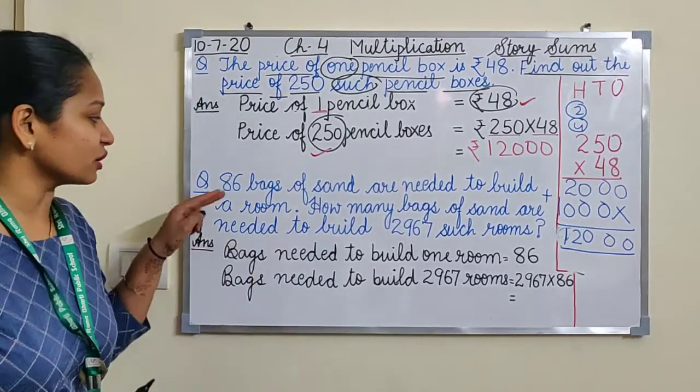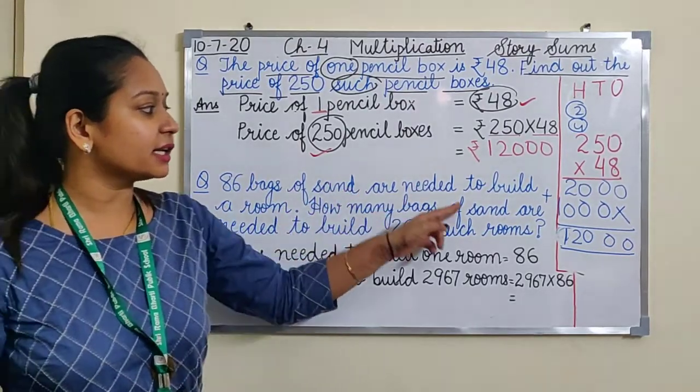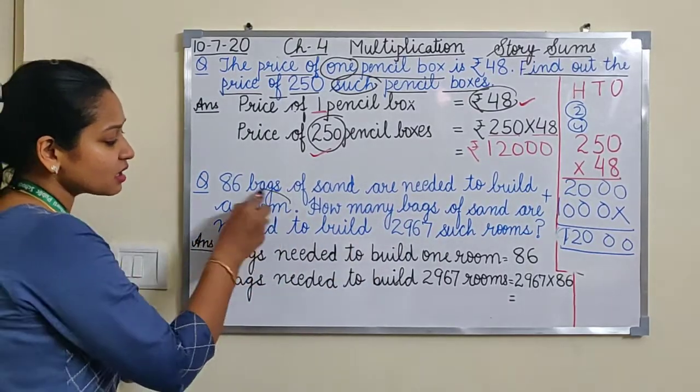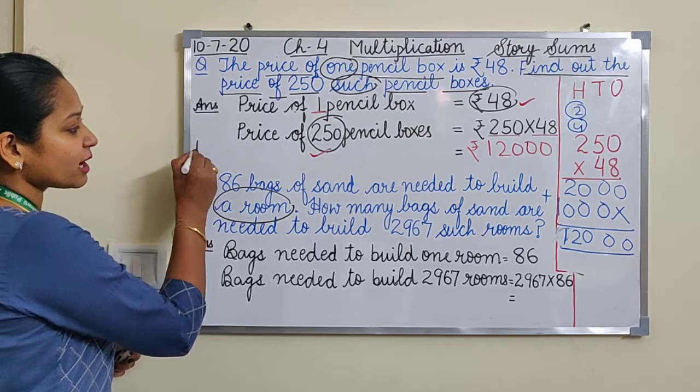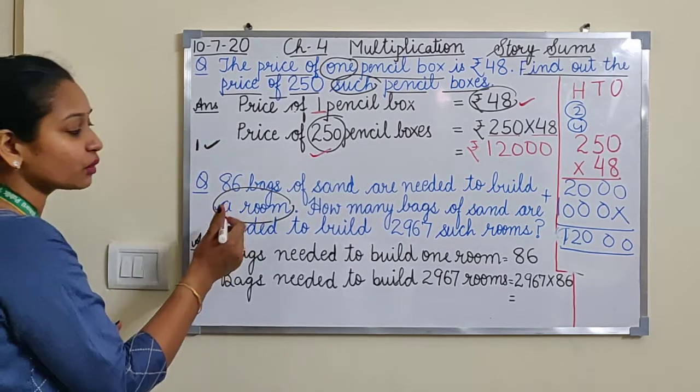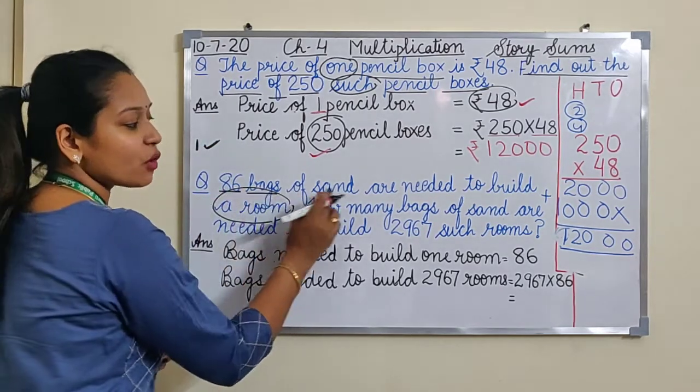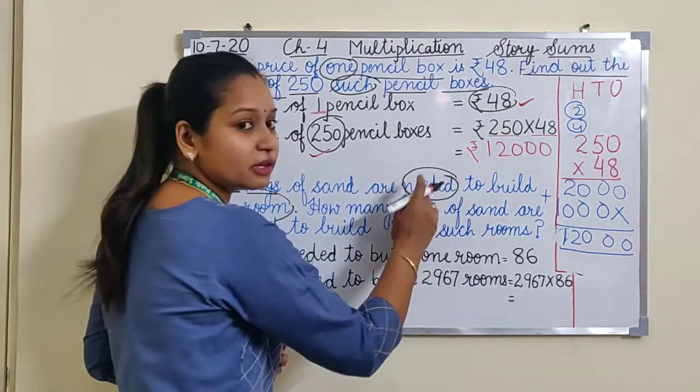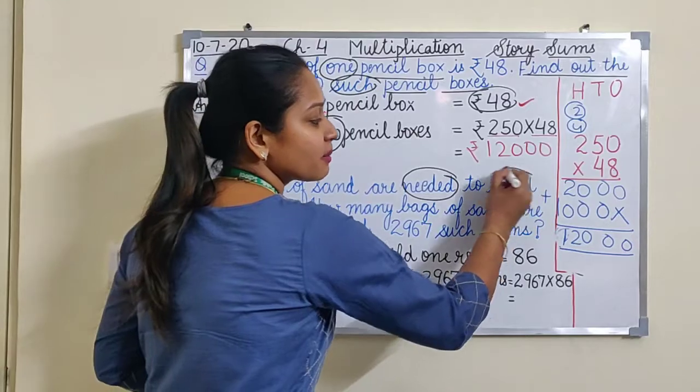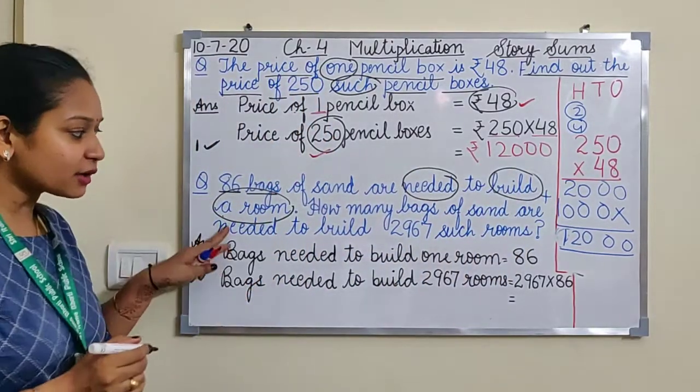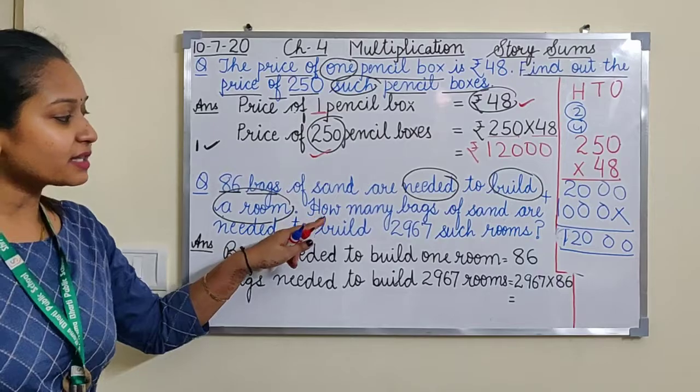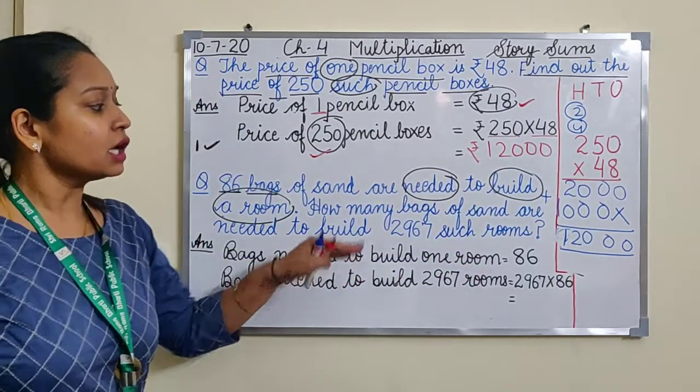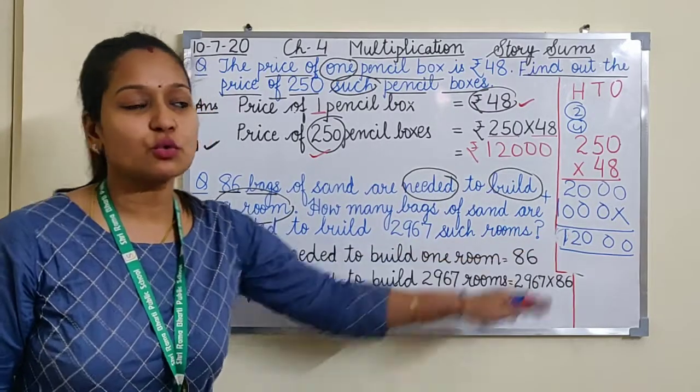Let's look at the next question. 86 bags of sand are needed to build a room. See the keyword? Again, a room is given means it's talking about one thing. One ka hamein already de diya inhone. 86 bags of sand are needed to build a room.